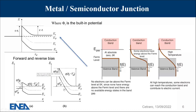Temperature is also very important. When we are at zero Kelvin, there are no electrons that can go over the Fermi level. So this level is very important for understanding the materials that we would like to use.